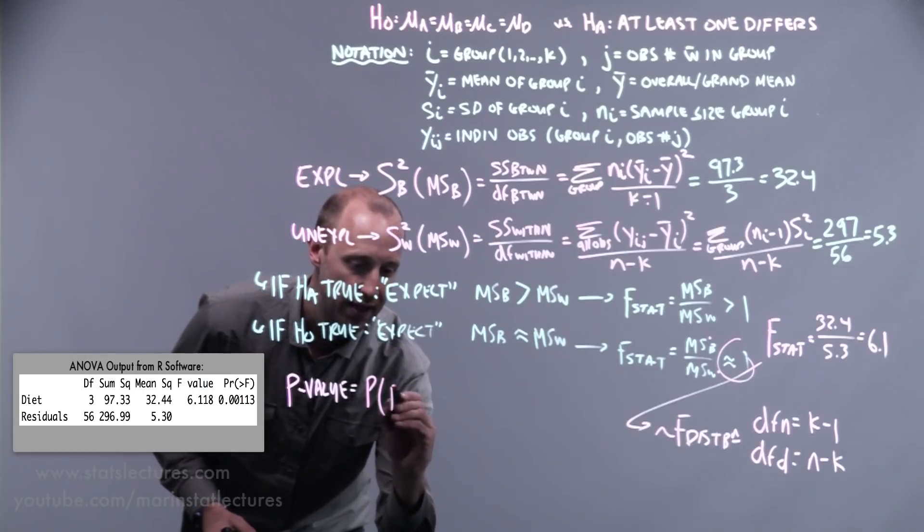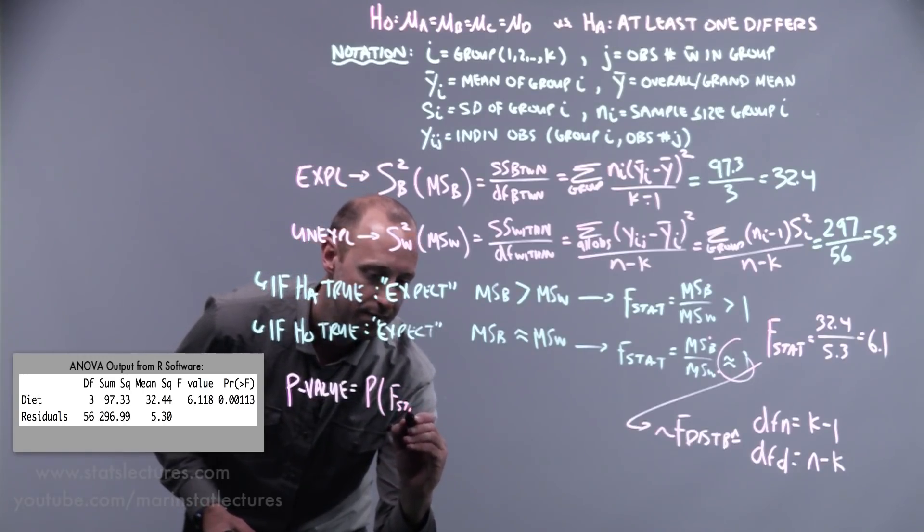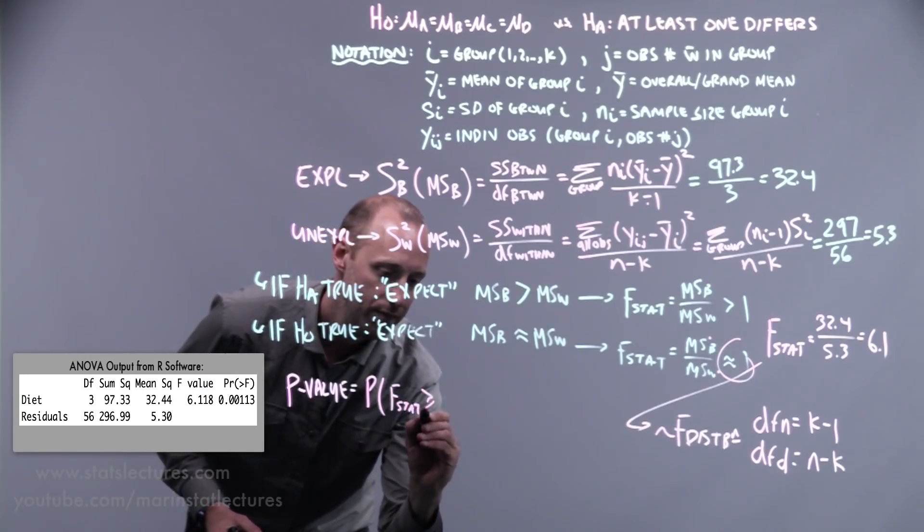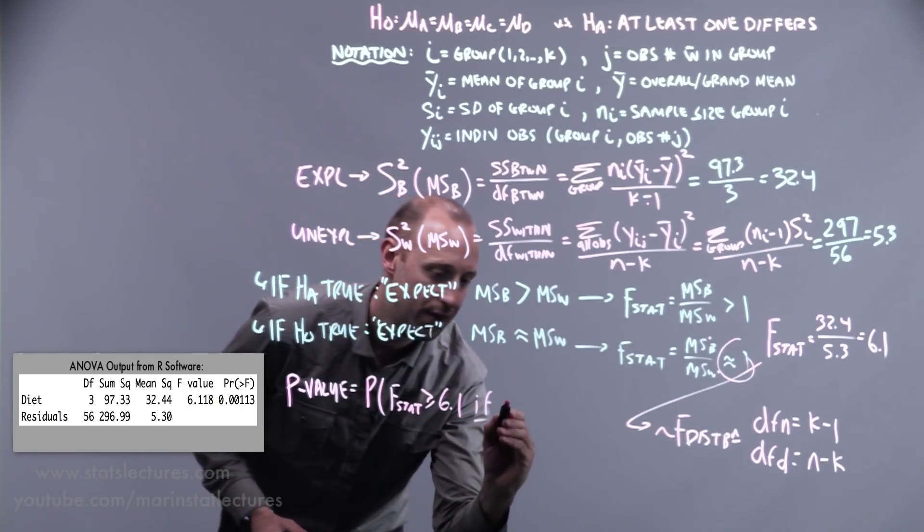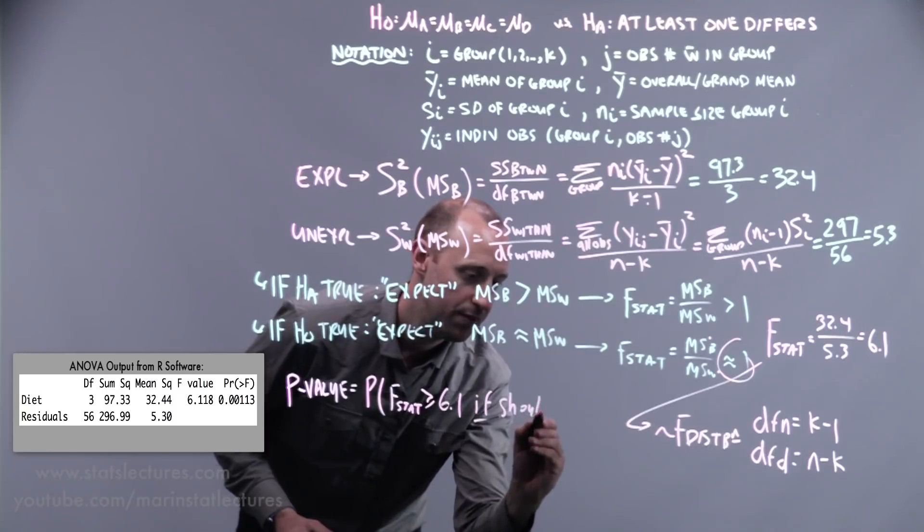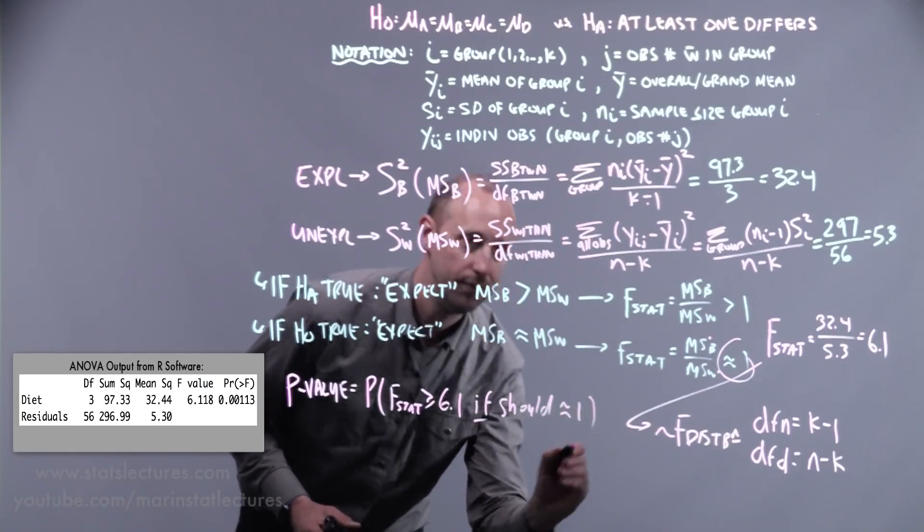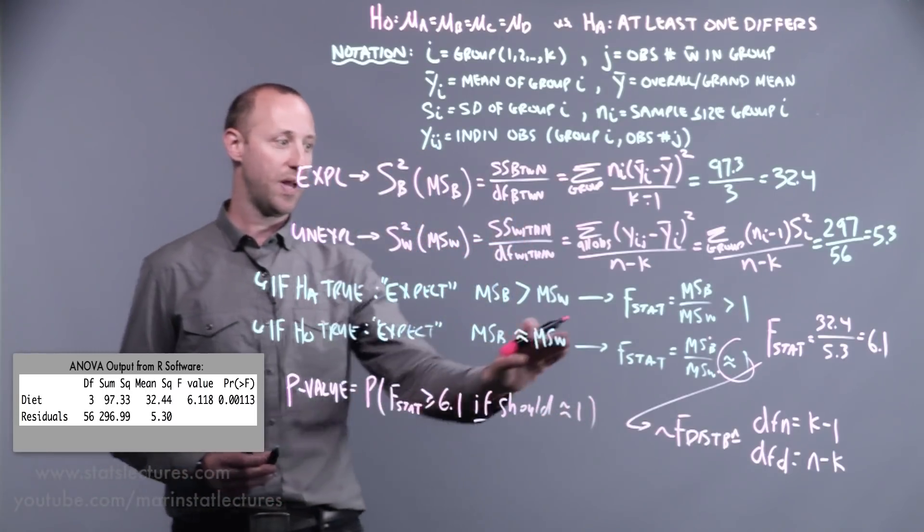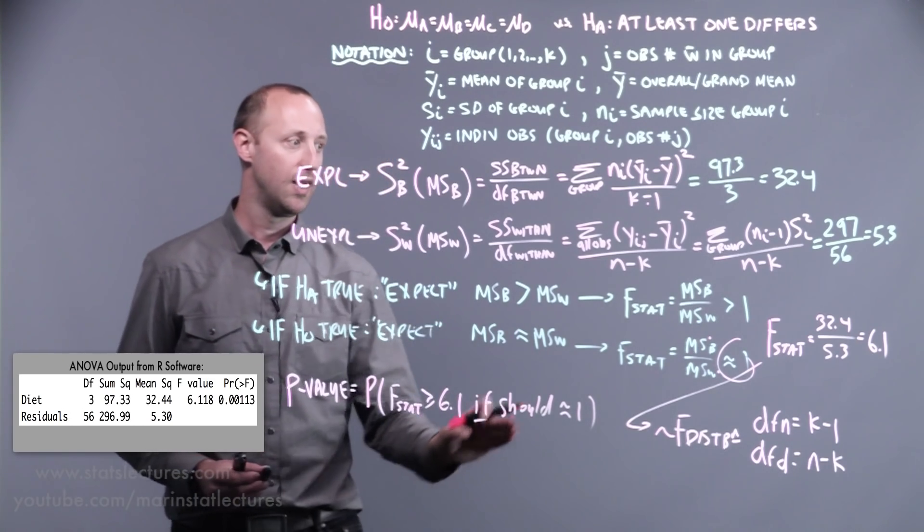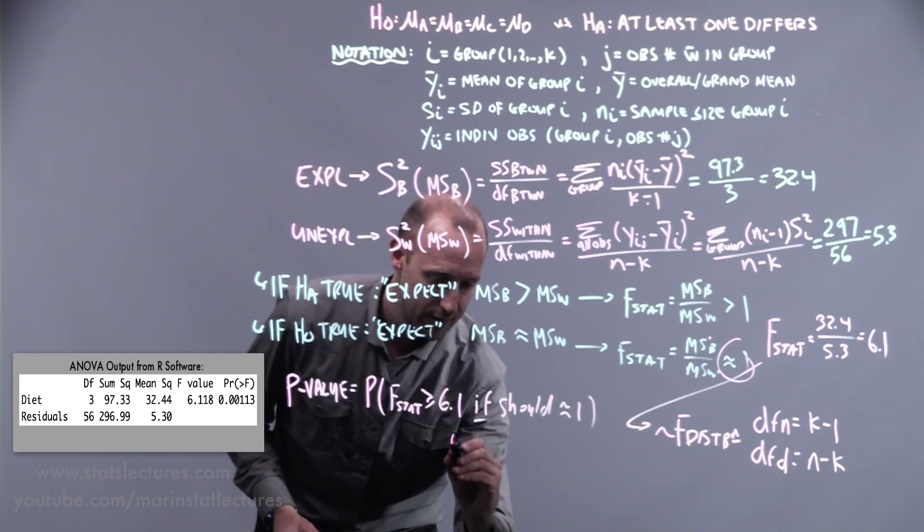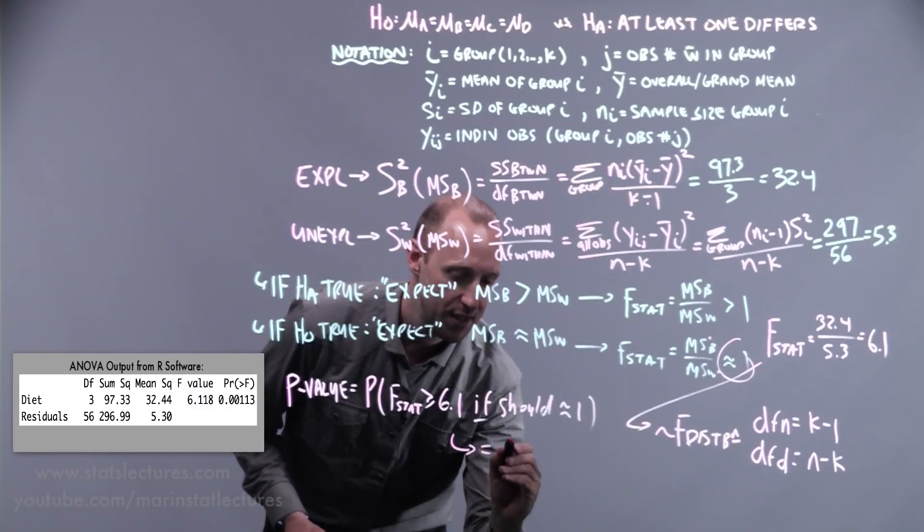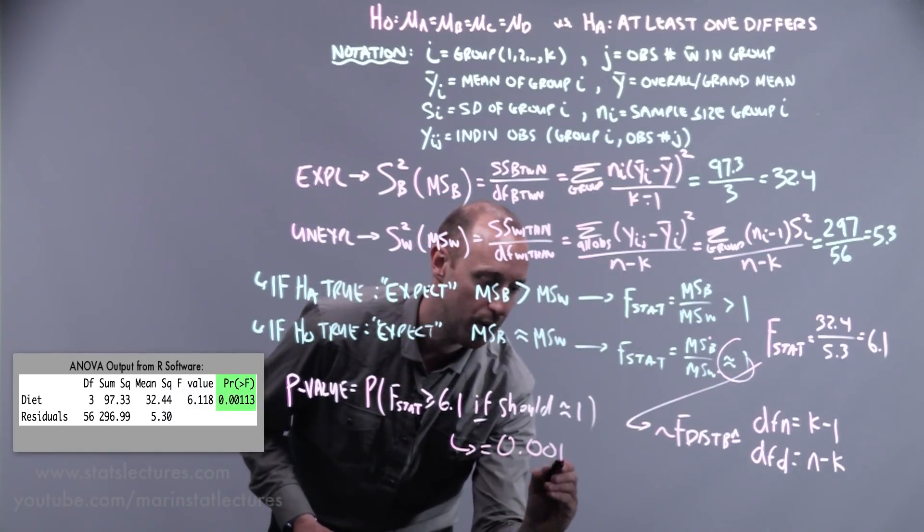So what's the probability of getting an F stat greater or equal to 6.1 if it should be roughly equal to 1? If our null is true and we'd expect our test stat to be roughly 1, what's the chance of seeing an estimate of 6.1 or more?